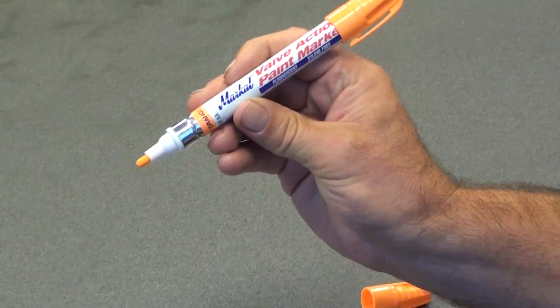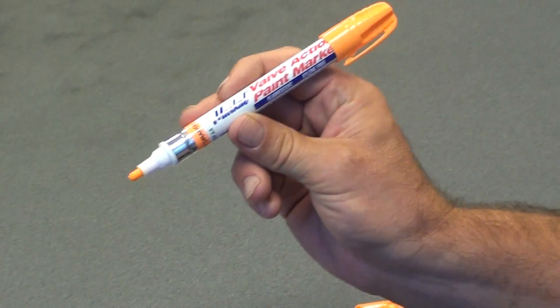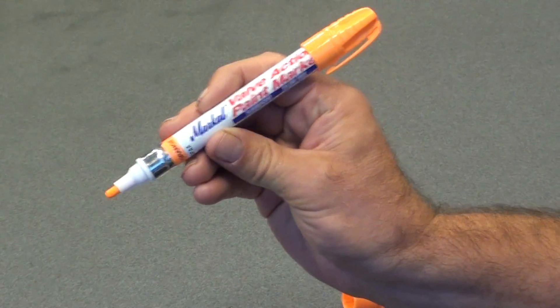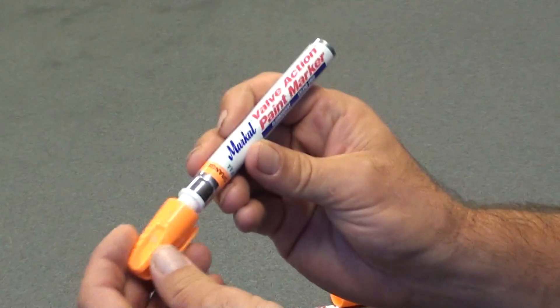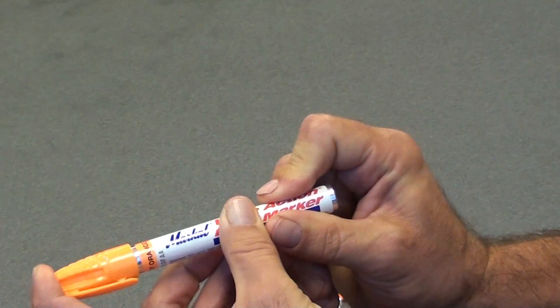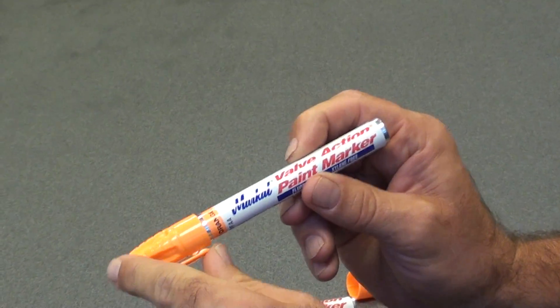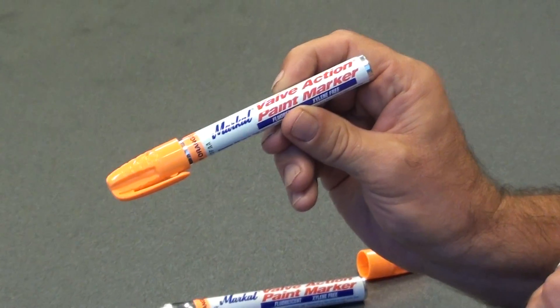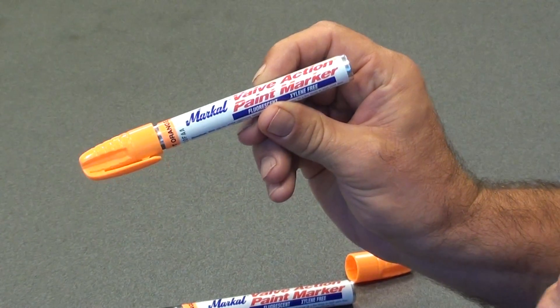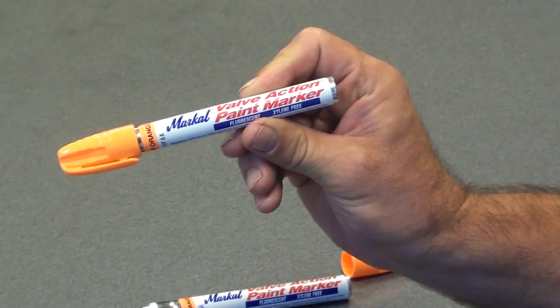The low odor formula is also an advantage to this marker. When done using, simply recap the marker. Make sure it clicks back on. You can hear it click. That seals the air out from entering into the nib and drying out the nib, which extends the life of the marker.